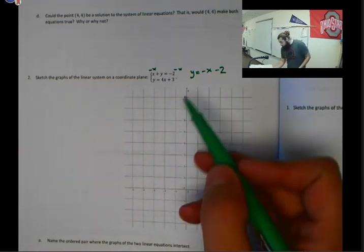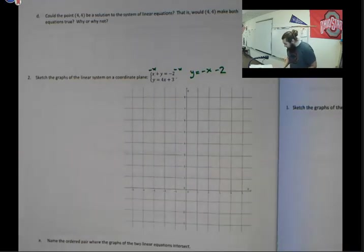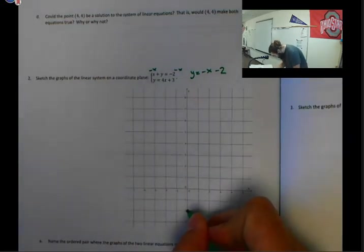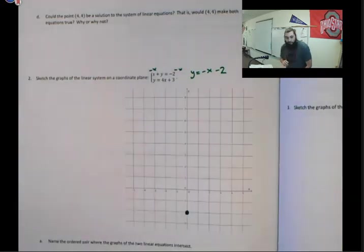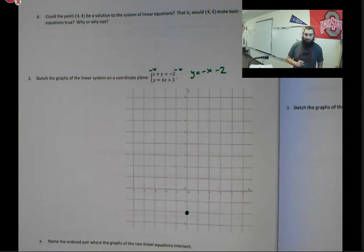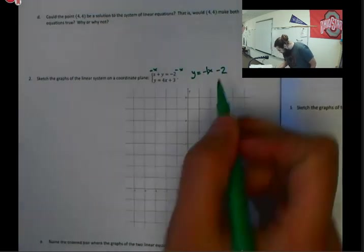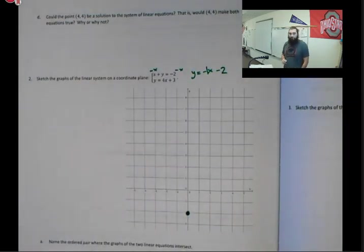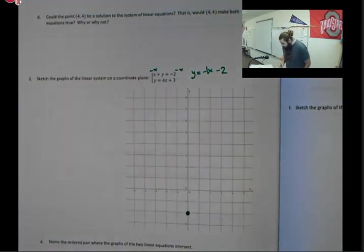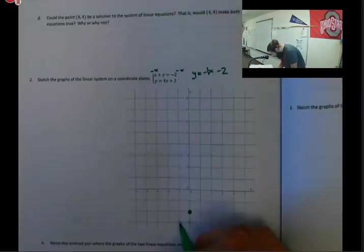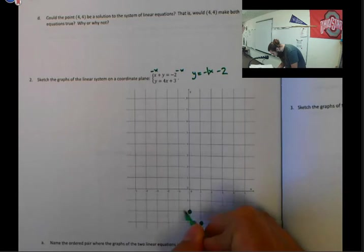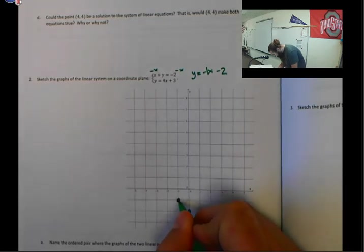We're going to start with the one that we transformed. Our first point is going to go at 0, negative 2 from our y intercept. And then our slope is negative x, or rather in this particular case, it's going to be negative 1. So to go from point to point with a slope of negative 1, we can go down 1 to the right 1, or we can go up 1 to the left 1. In fact, we're going to do both. Down 1 to the right 1 for one point, and then up 1 to the left 1 for another point.